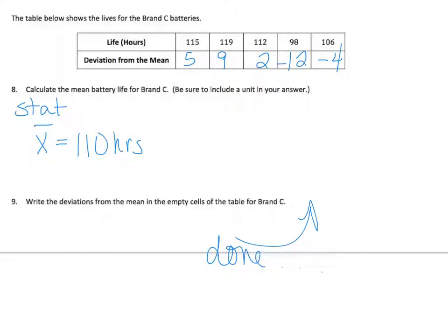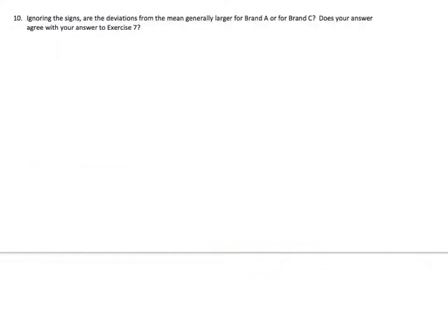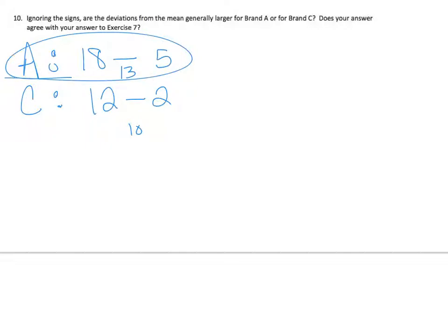Now, we're going to use this on my next slide, but you have your paper in front of you, so you don't have to rewrite anything or look anywhere. So, ignoring the signs, are the deviations from the mean generally larger for brand A or brand C? Does your answer agree with your answer to exercise 7? So, looking back, brand A, I'm going back to my deviations. Not looking at the signs, just the numbers. I go from like, 18 is my biggest and 5 is my smallest. Then if I look at C, my biggest would be 12. My smallest would be 2. The difference here is 10. The difference here is 13. Therefore, I would say that the deviations from the mean for A are greater, which is what I estimated for number 7. I guessed right.